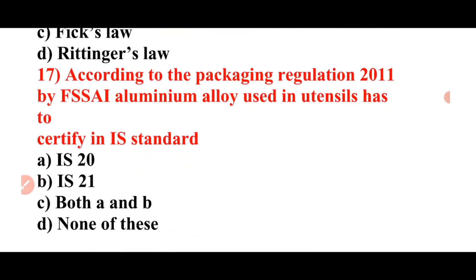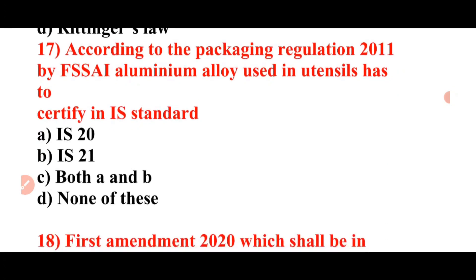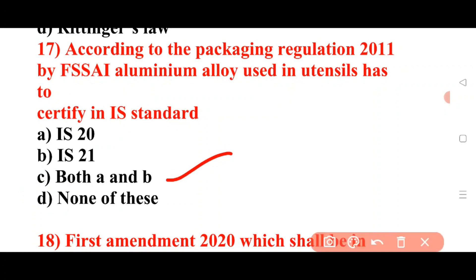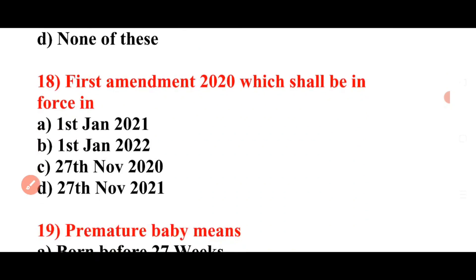Next question: According to packaging regulation 2011 by FSSAI, aluminum alloy used in utensils has to be certified to which IS standard? Options: IS 20, IS 21, both A and B, none of the above. Answer: C is the correct answer — both IS 20 and IS 21.